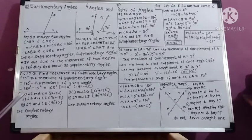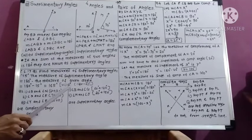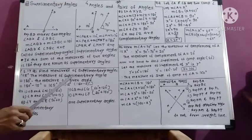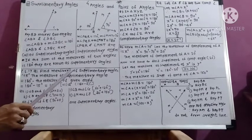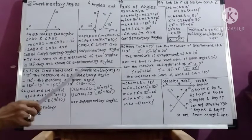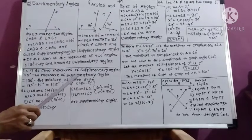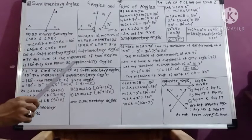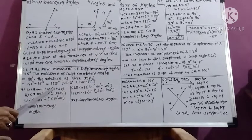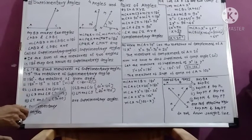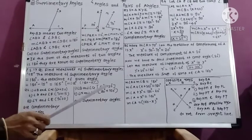Now, question number 2. In this question, different angle measures are given. We have to identify pairs of complementary angles and pairs of supplementary angles. For complementary pairs, we need the sum of two angles to be 90 degrees. Angle B and angle N have measures 60 and 30 degrees — their sum is 90 degrees, so angle B and angle N are complementary angles.